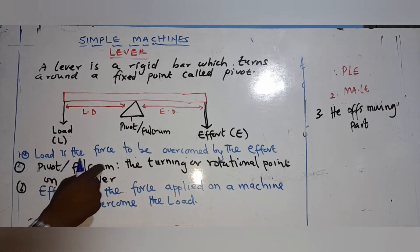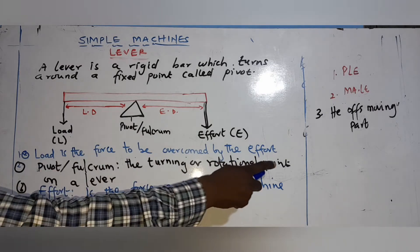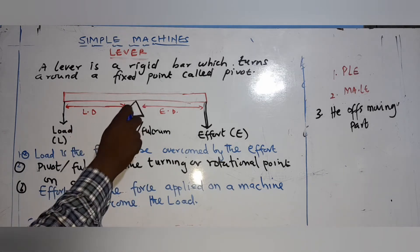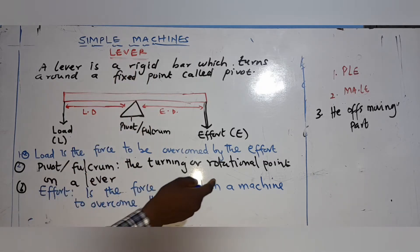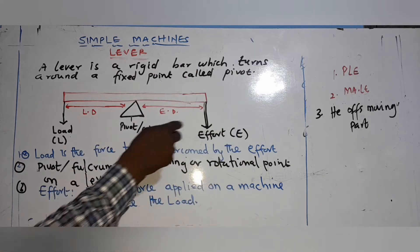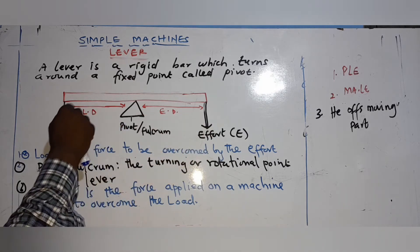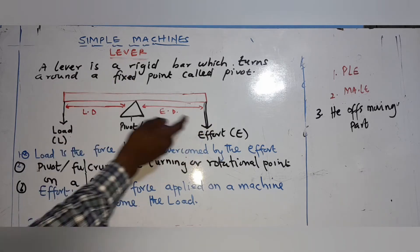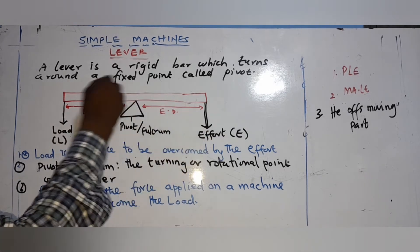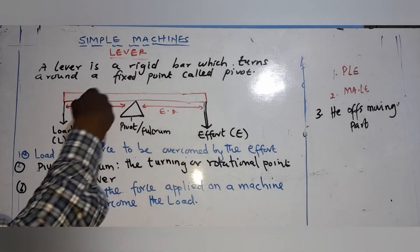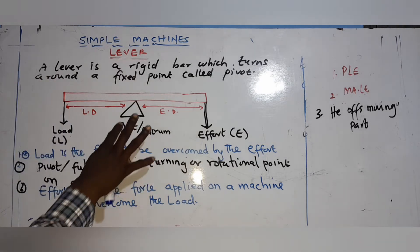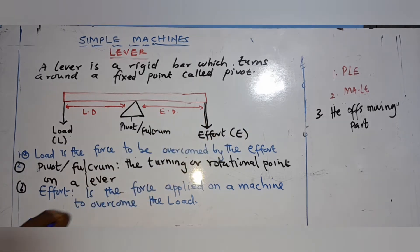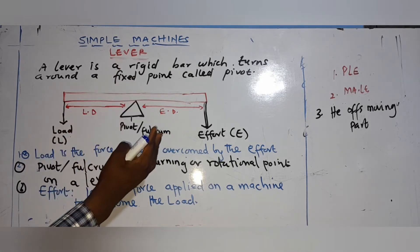The pivot or fulcrum is the turning or rotational point on the lever — the fixed point where the lever rotates or turns. Effort is the force applied to overcome the load, while the load is the force overcome by the effort. These overcome each other: load is overcome by effort, effort overcomes load. The unit for both load and effort is Newtons.